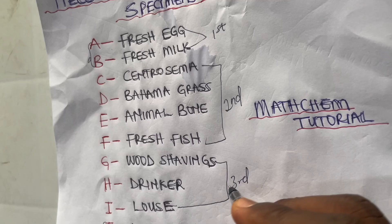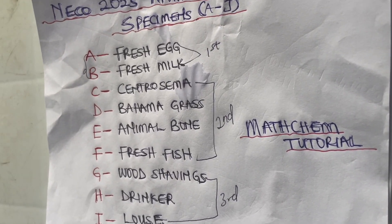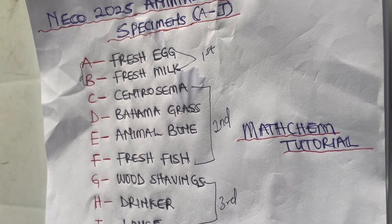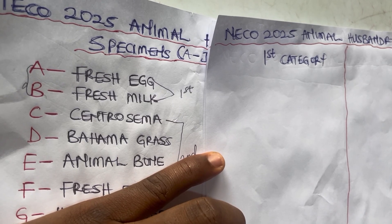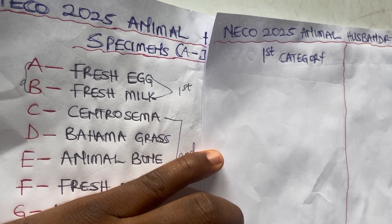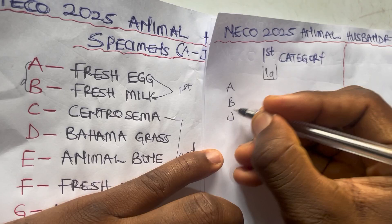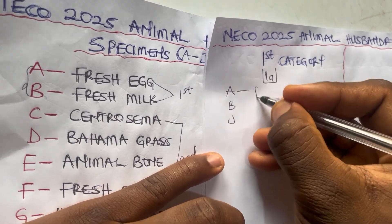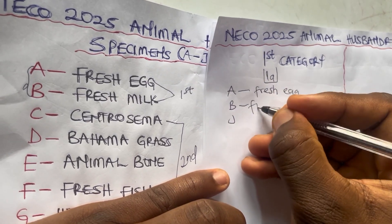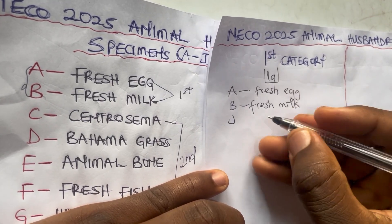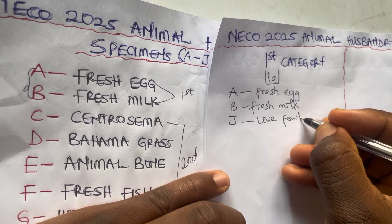The first predicted question is to identify specimens A, B, and J. Specimen A is fresh egg. Specimen B is fresh milk. Specimen J is a live fowl.